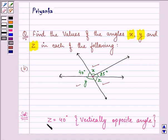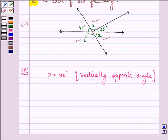We are through with angle z. Now let us proceed with angle y. We can see that angle y plus angle z is forming a linear pair, so their sum will be equal to 180 degrees.